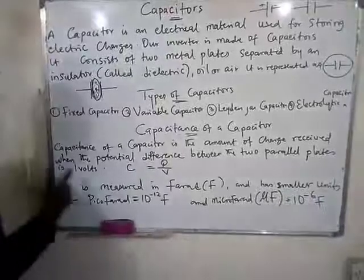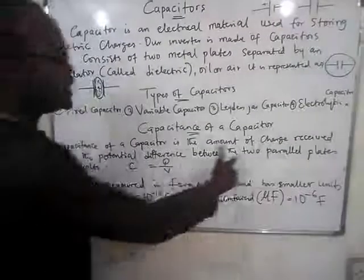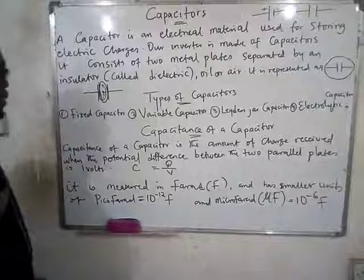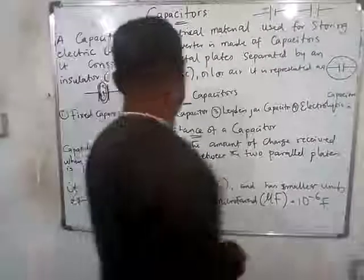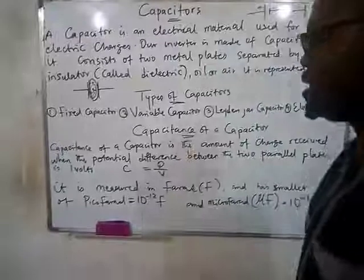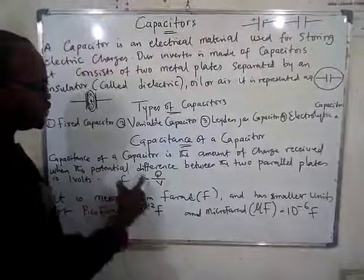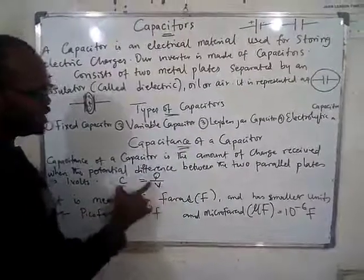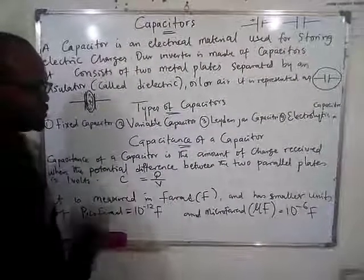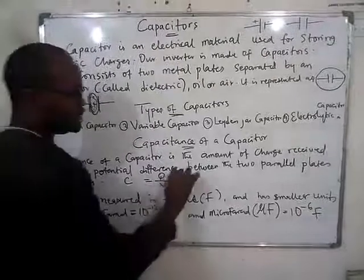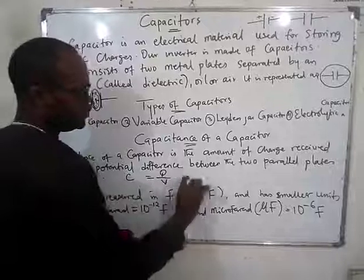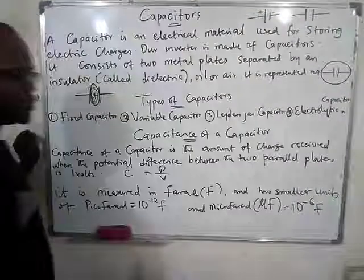The capacitance of a capacitor is simply the amount of charge received when the potential difference between the two parallel plates is equal to one volt. It can be represented as: C equals charge divided by volts. So capacitance equals the amount of charge stored divided by the potential voltage.